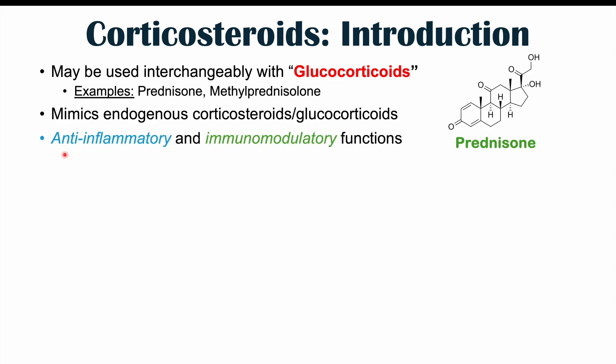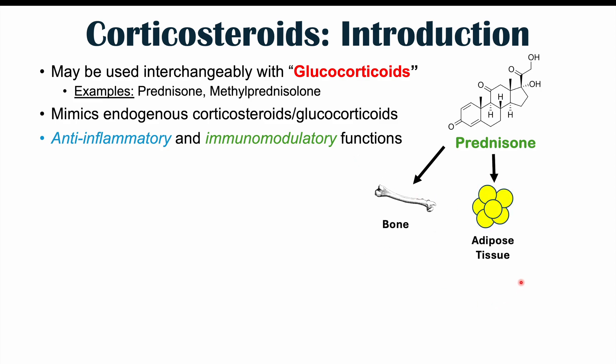Corticosteroids have anti-inflammatory and immunomodulatory functions — this is the reason why they're used. But the problem is they have many different functions and effects throughout the body, including effects on bones and adipose tissue. Their immunomodulatory and anti-inflammatory effects occur via their ability to inhibit NF-kappa-B, or nuclear factor kappa-B. Suppressing NF-kappa-B leads to suppression of the transcription of pro-inflammatory cytokines, suppression of B cells and T cells, and prednisone also leads to apoptosis of T cells.